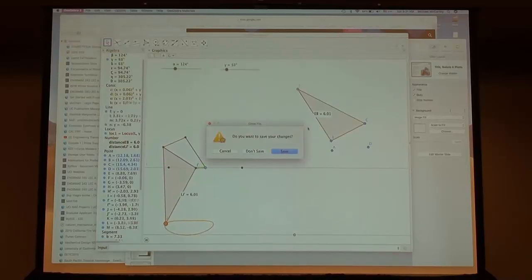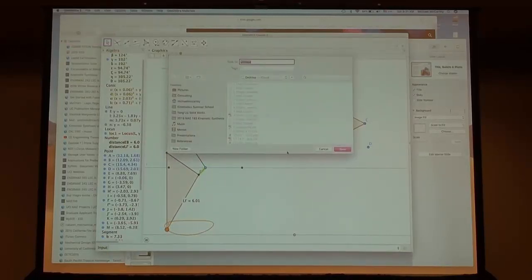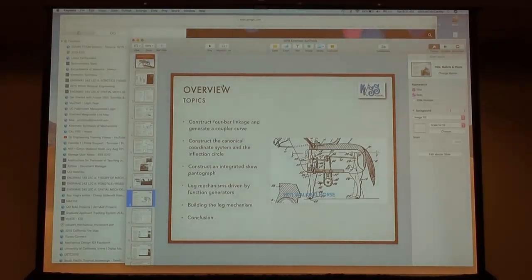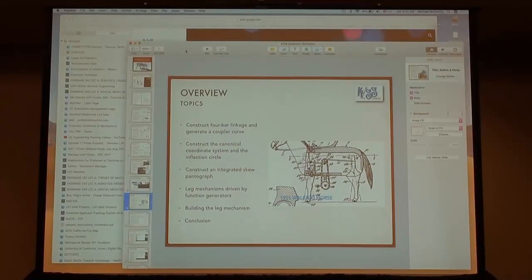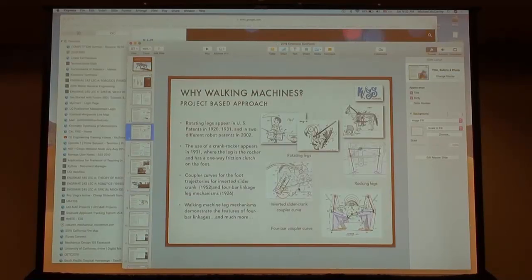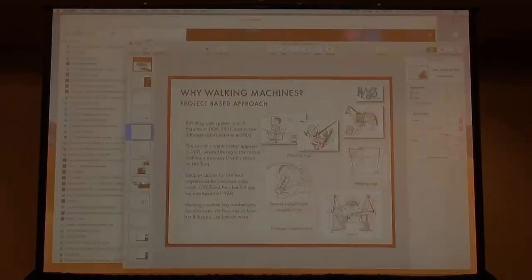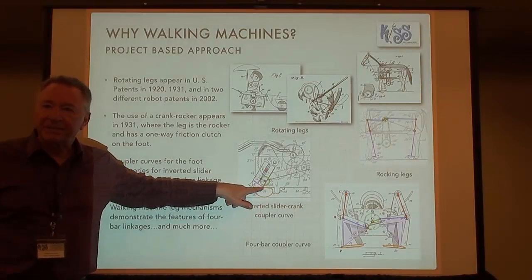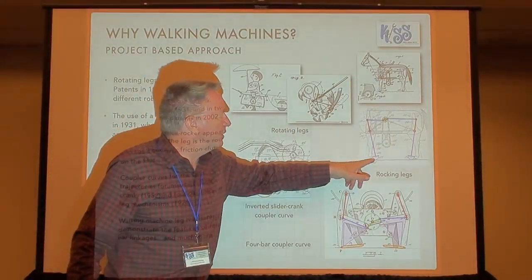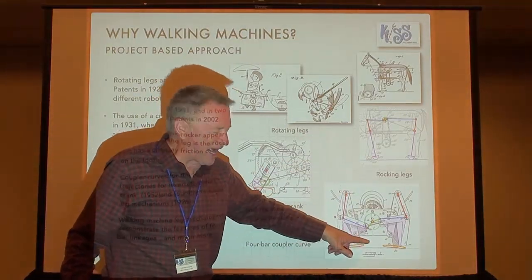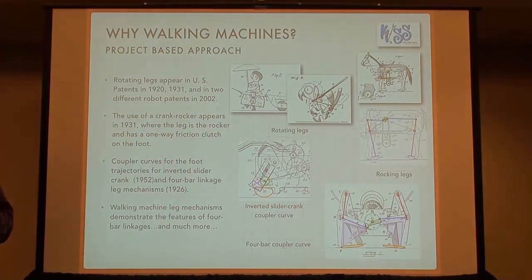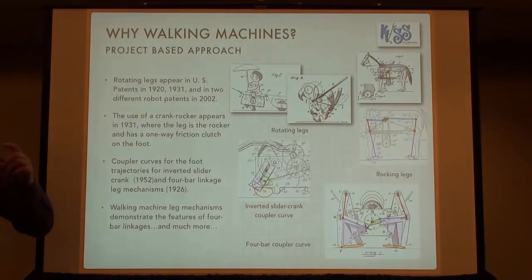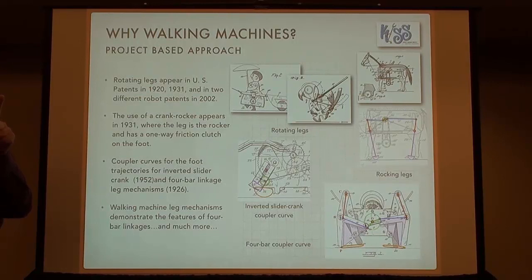Done with my GeoGebra demonstration. The question was: shouldn't the coupler curve be upside down? Correct. Look at all these coupler curves in the patent literature — upside down. Then look at this one — they barely got it flat. Getting a coupler curve the shape you want is the entire question. And not only that: once you get the shape you want, how do you position it the way you want? The answer to the first question is curvature theory. The answer to the second question is the skew pantograph.